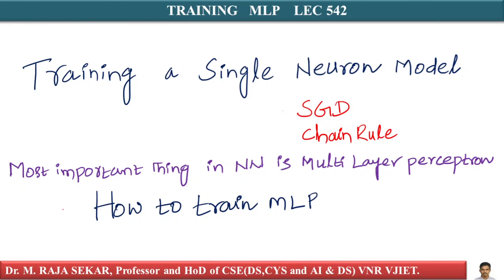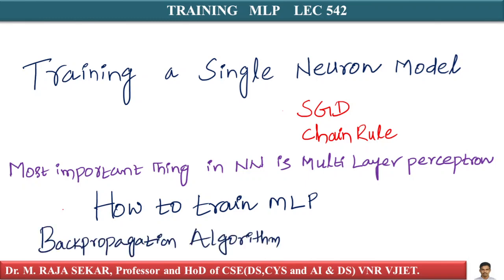In the next few lectures we will learn an algorithm called the backpropagation algorithm. Don't worry about the terminology — it is nothing but an extension of what we learned in the single neuron model. It is just the chain rule with SGD and a couple of very simple tricks. I will go slightly slower in this lecture so you understand the notation and the mathematics.